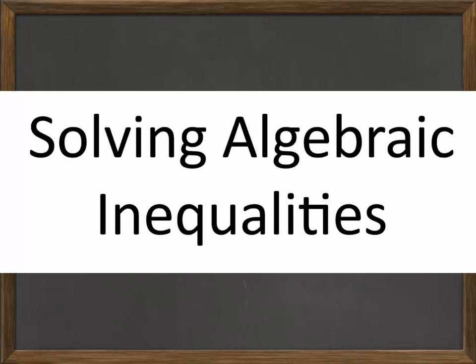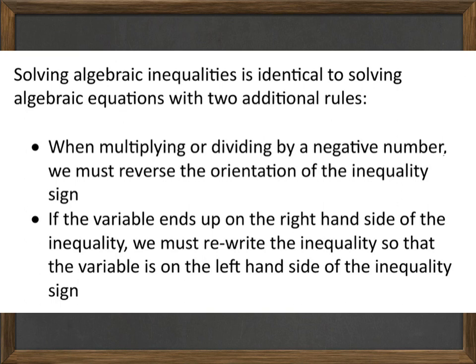Welcome to this video on solving algebraic inequalities. Solving algebraic inequalities is identical to solving algebraic equations with two additional rules. The first rule is that when multiplying or dividing by a negative number, we must reverse the orientation of the inequality sign. The second rule is that if the variable ends up on the right-hand side of the inequality, we must rewrite it so that the variable is on the left-hand side.